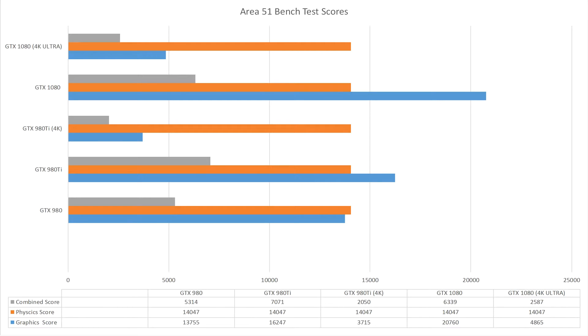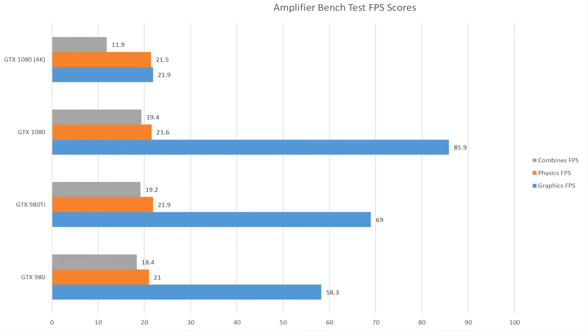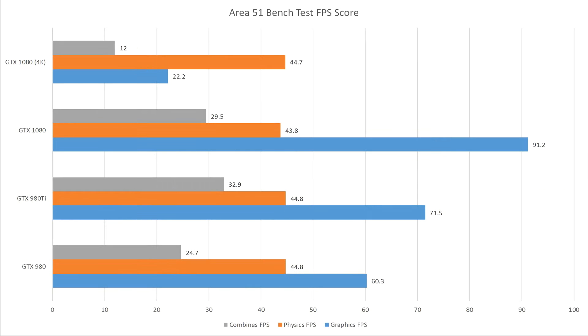Following that, we did the same with the second video — the Area 51 bench test scores graph — where we had the physics, the graphics, and the combined scores for the GTX 980, the 980Ti, the 1080 in 4K, and I just did the Ultra this time so we can compare the two Ultra scores later. After that we did an Amplifier bench test FPS score, looking at just the frames per second achieved from the four tests on the Amplifier, and then the same again for the Area 51 bench test FPS scores.